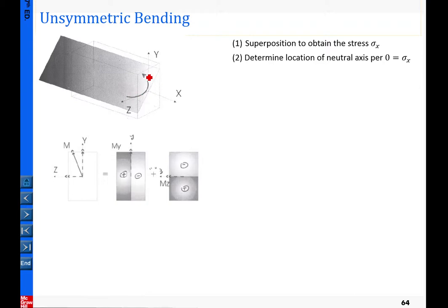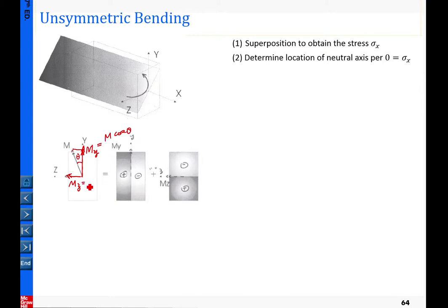The bending applied is in an inclined plane tilted from the symmetric plane, so the double arrow looks like this. We start by looking at the cross-section and decomposing this bending into two components. One is the component of M in the y direction, designated as My, and the other projected component is Mz. Using the double arrow notation, if theta is the angle, then My equals M times cosine theta and Mz equals M times sine theta. So the original unsymmetric bending is decomposed into two subsystems: one under My only, and one under Mz only.